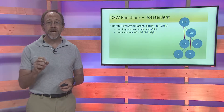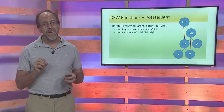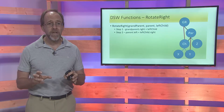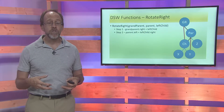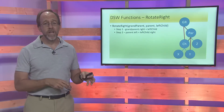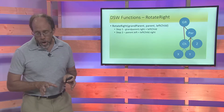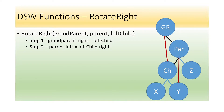The key to the DSW algorithm is the rotate function. The concept is that you can take a group of nodes, move them around, and maintain the organizational scheme. If your scheme was less to the left, more to the right, it doesn't lose that — but it rotates them, moving them either right or left. What we're going to show here is the rotate right. It's a three-step scheme where all you're doing is moving pointers. You have a grandparent, a parent, a child, and then X, Y, and Z nodes.